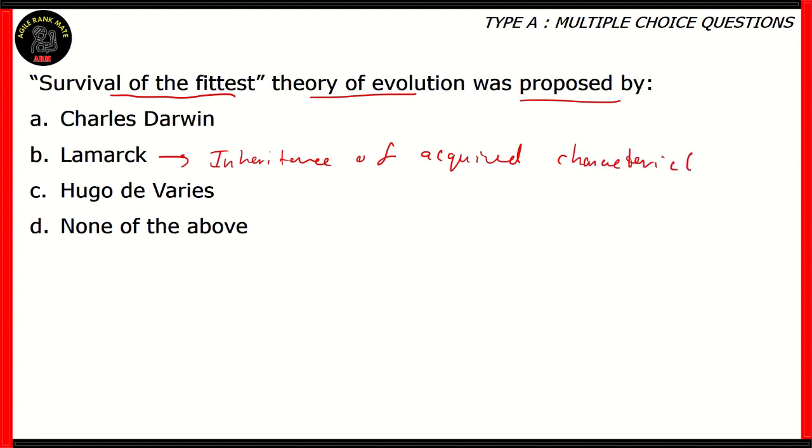So basically, what this means is that, for example, a giraffe would have had a short neck in the past, and then due to its willingness to eat leaves higher up, so it would start stretching out its neck, and then that resulted in the long necks of giraffes. That was Lamarck's theory. Turns out that wasn't the case. So option B would be the incorrect option when it comes to survival of the fittest theory. So option B is incorrect.